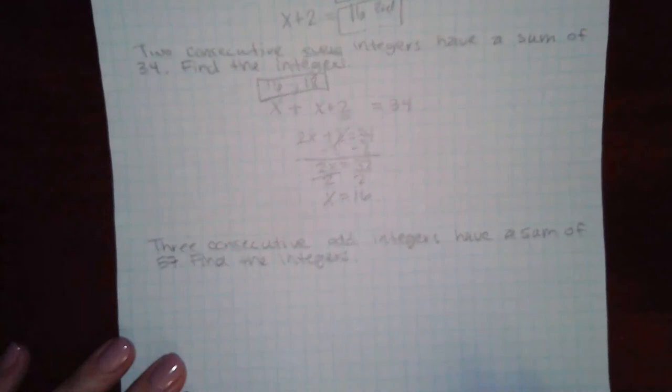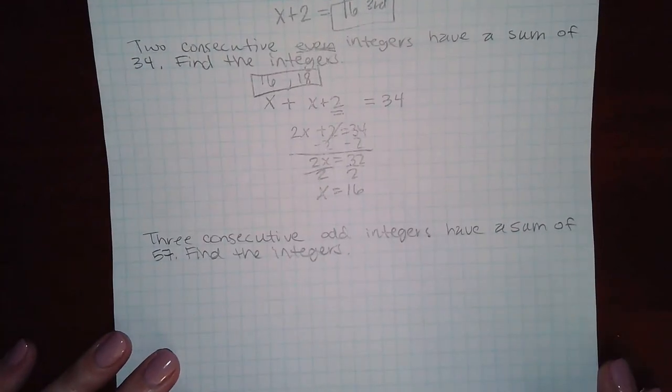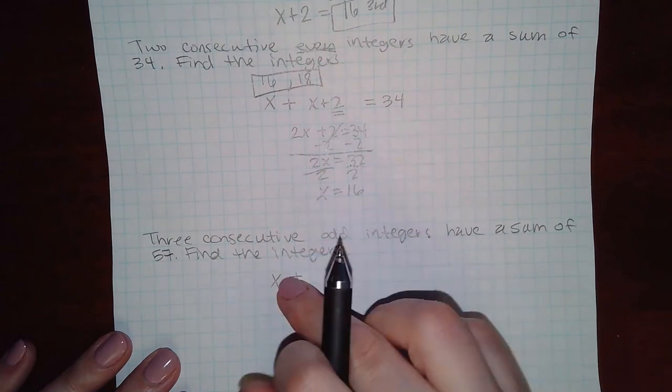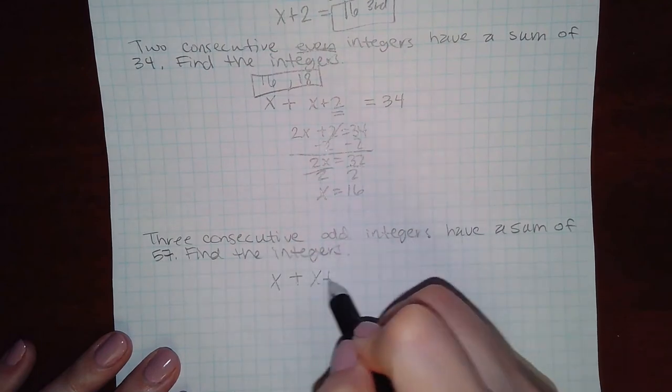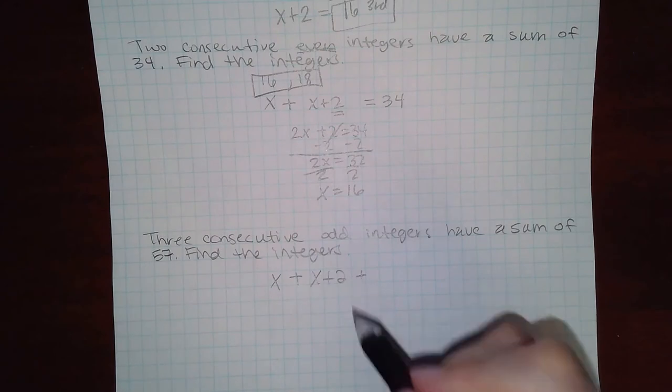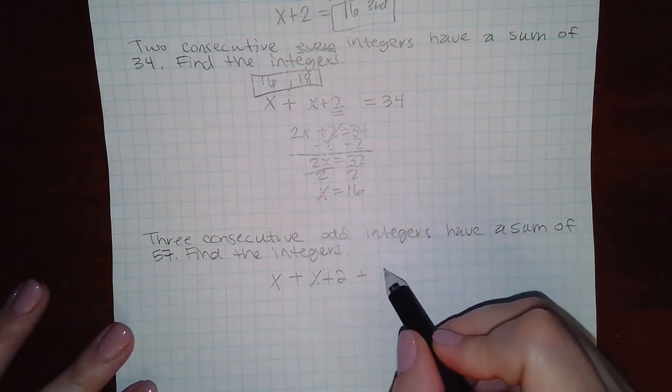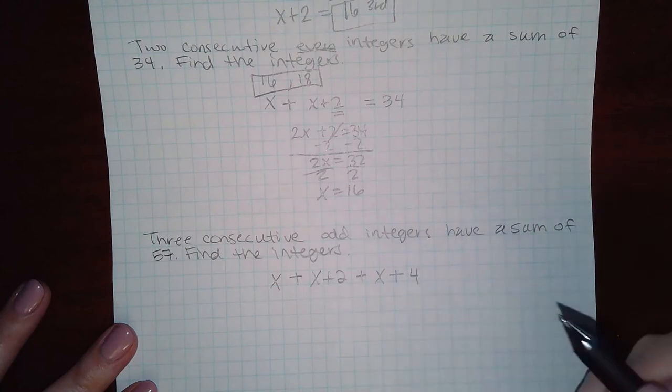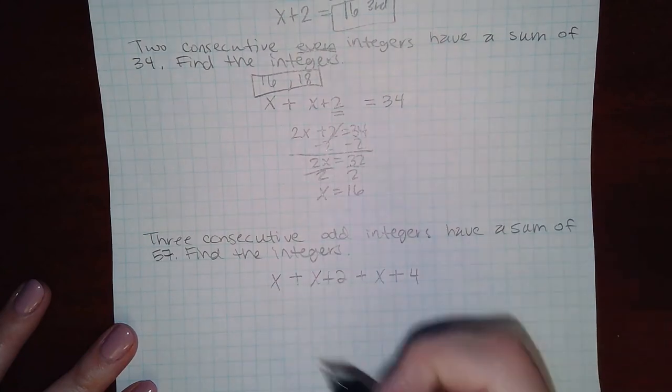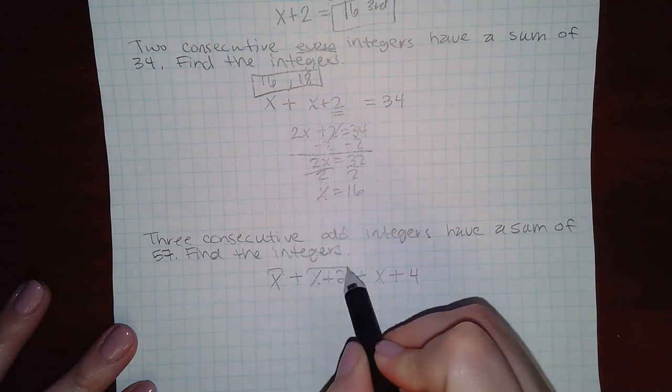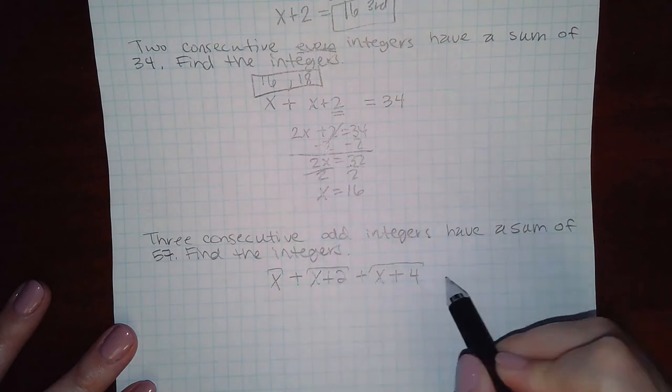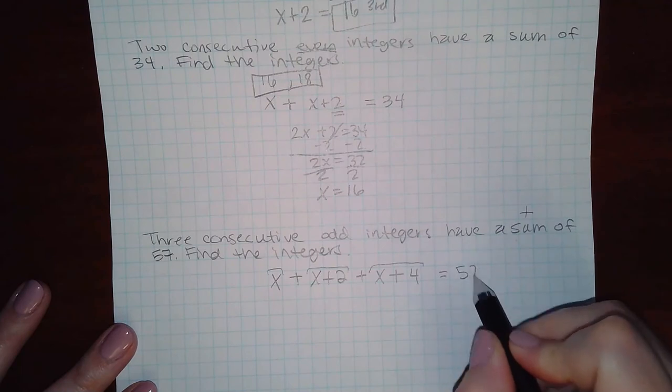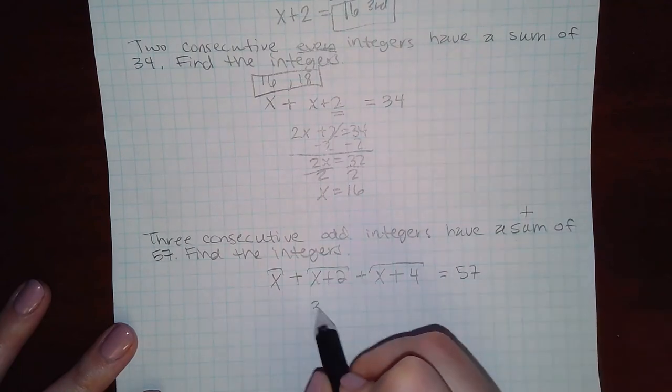Now the last problem says three consecutive odd integers. If you start off with the first integer, in order to get to the next odd number you also have to add 2, and then to get to the next odd number you have to add 2 more, which means x plus 4. So that's the three consecutive integers. That sum, sum means to add, equals 57. If we combine our like terms we get 3x plus 6 equal to 57.